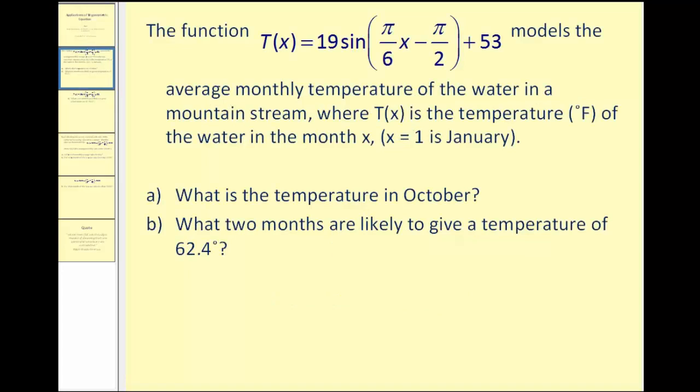Here we have a function that models the average monthly temperature of the water in a mountain stream, where T(x) is the temperature in Fahrenheit of the water in the month x, where x equals one is January, x equals two would be February, and so on.